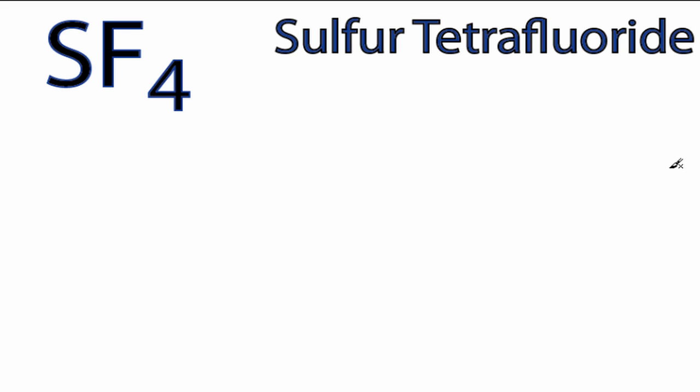Hi, this is Dr. B. Let's do the SF4 Lewis structure. On the periodic table, 6 valence electrons for sulfur, 7 for fluorine, but we have 4 fluorines for a total of 34 valence electrons.